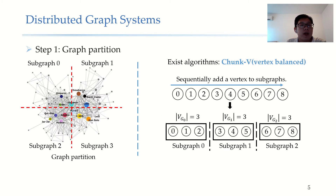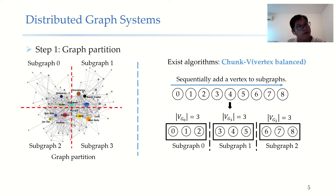Similarly, if we keep the number of vertices in each subgraph equal, we can get chunkV. For chunkV, the number of edges in each subgraph may be imbalanced.